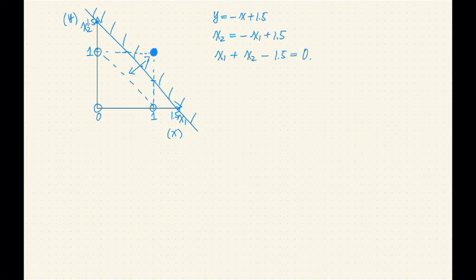So let's try this. The positive example is 1, 1. So let's plug in. x1 is equal to 1 and x2 is also equal to 1. So 1 plus 1 minus 1.5. This gives us 2 minus 1.5, which is 0.5. If we apply the step function, this is a positive number. So our output value would be 1. And that's the correct output value.